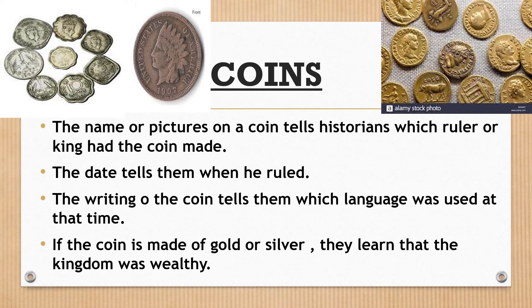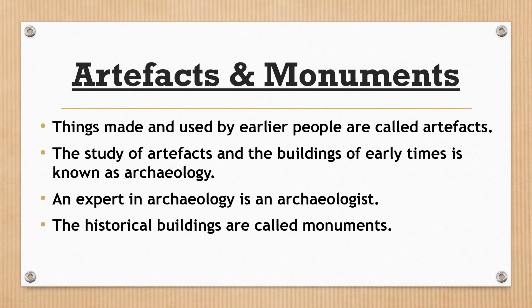The metal was heated to soften it. It was then used to paint or stamp leaves or pictures, creating what is known as a punch mark on the coin.